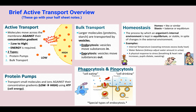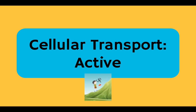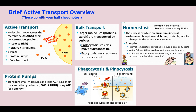Active transport is when we have molecules that are moving across the membrane against their concentration gradient. I like to think about this visually, like against gravity, like my little guy climbing the hill. We're going from low to high concentration. And because this is not the way molecules naturally like to go, we're going to need energy to make them go that way.